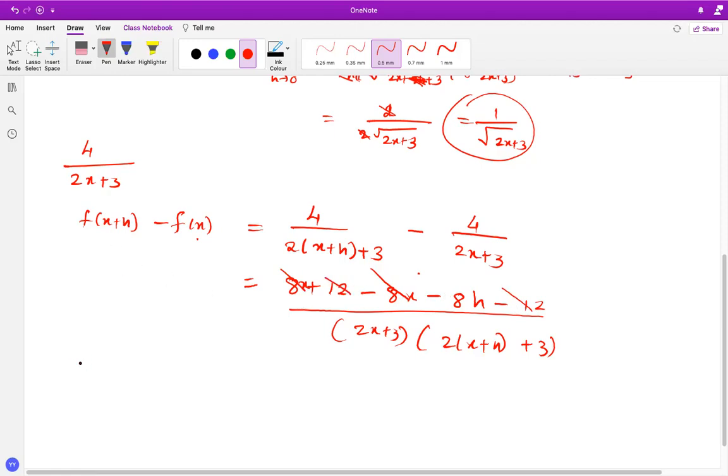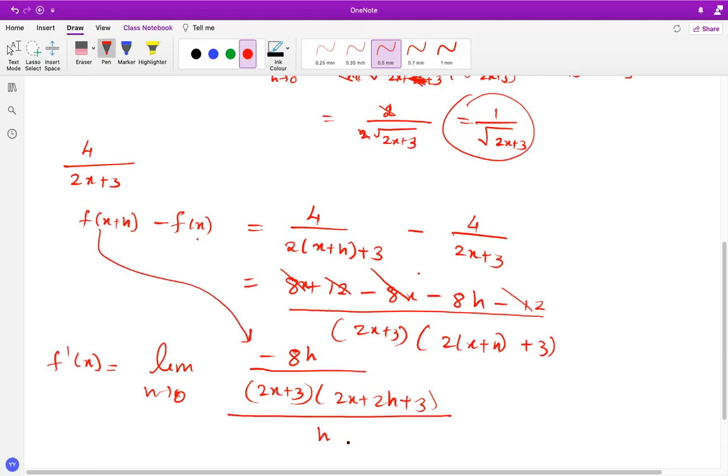Now putting in this, the formula for the differentiation, f dash x equals to limit, since h has to be pretty close to 0, we get minus 8h over 2x plus 3 and, 2x plus 2h plus 3. That's my, this simplification. So this is actually f of x plus h minus f of x and the whole thing divided by h. Now, since you're dividing a number by a fraction by a number, this h and this h get cancelled. If you remember this rule, a over b divided by c is actually a over bc. So this is what is happening here.